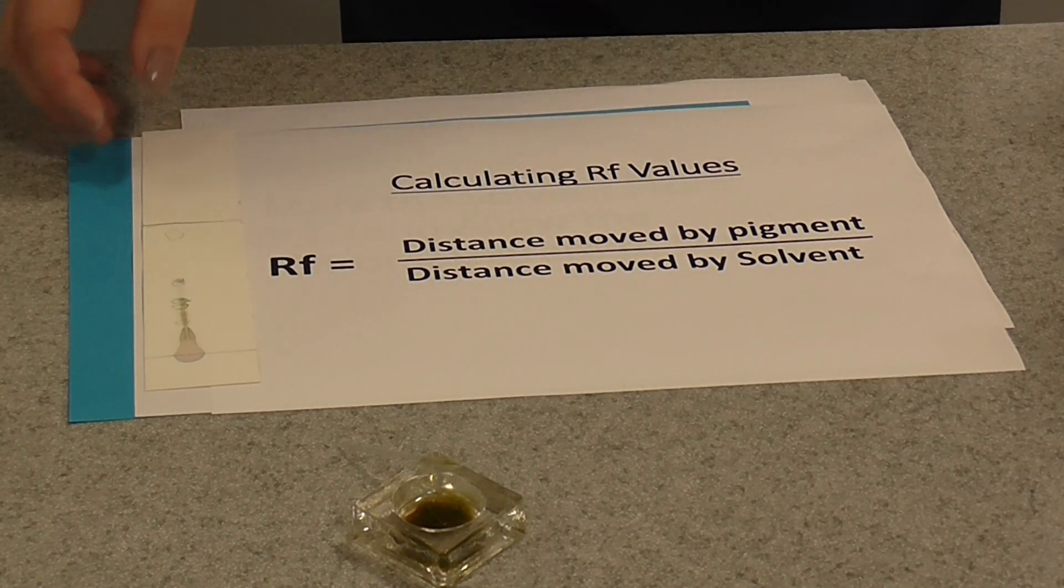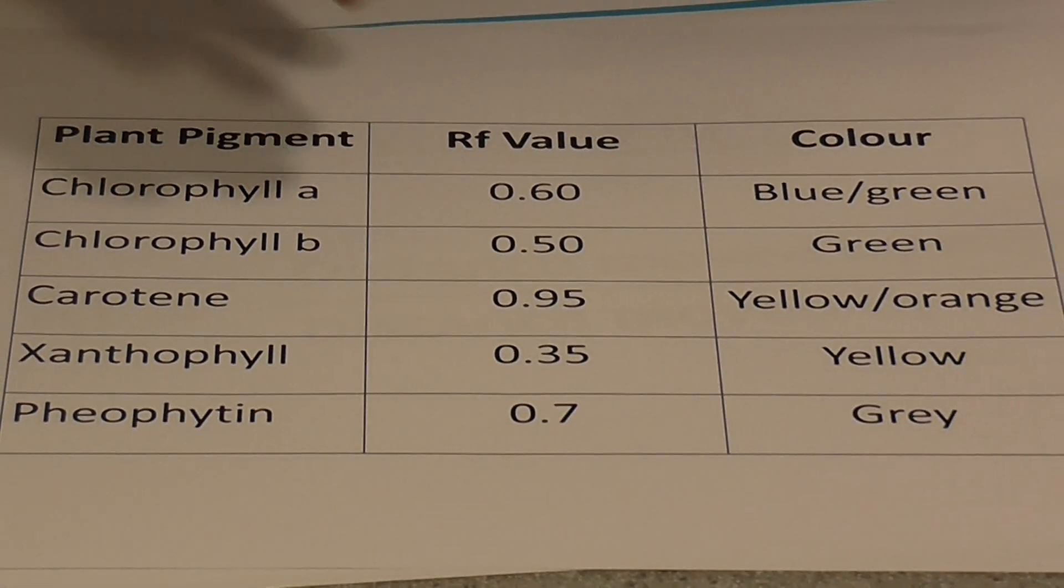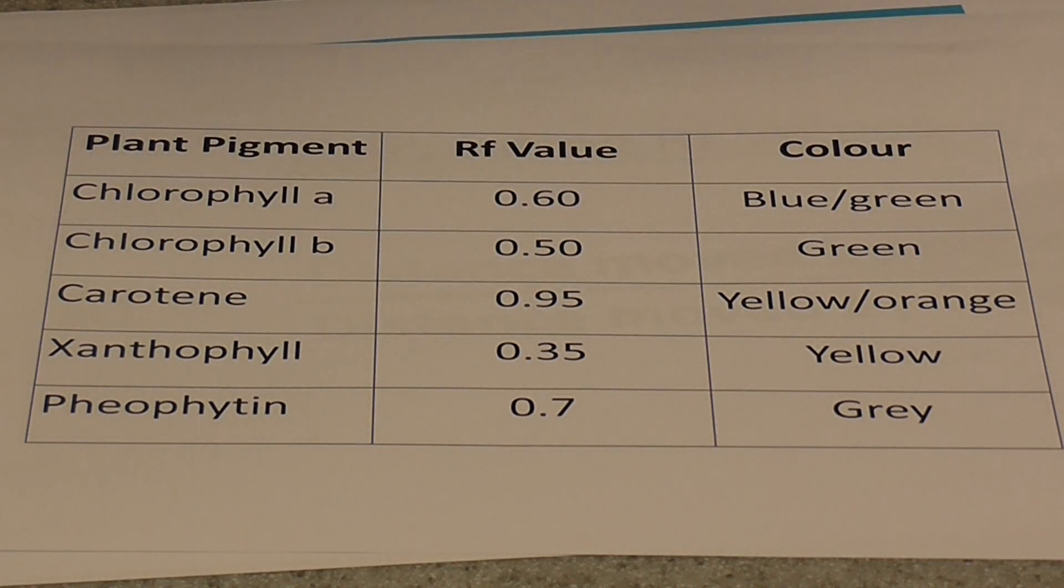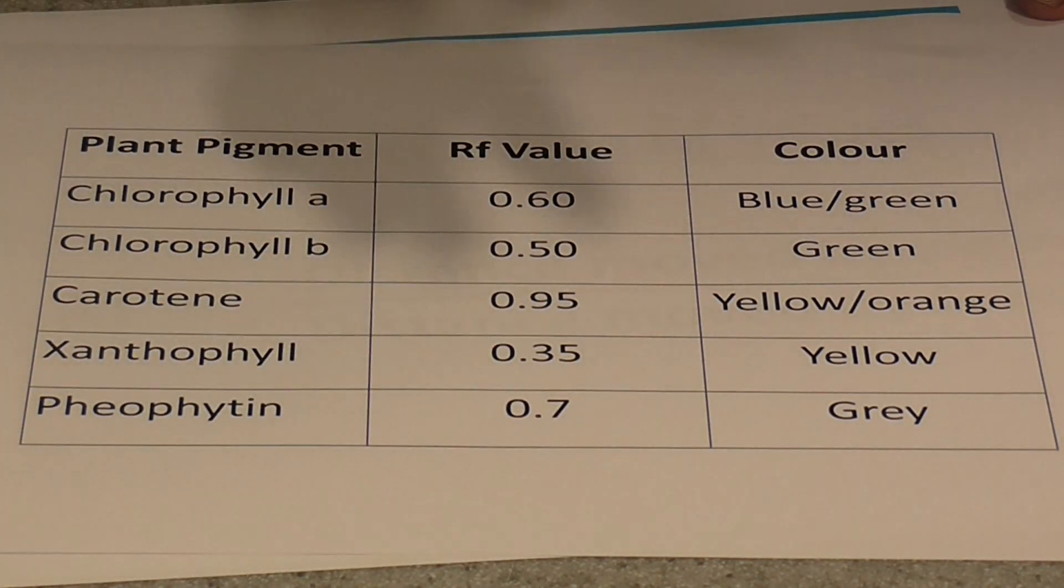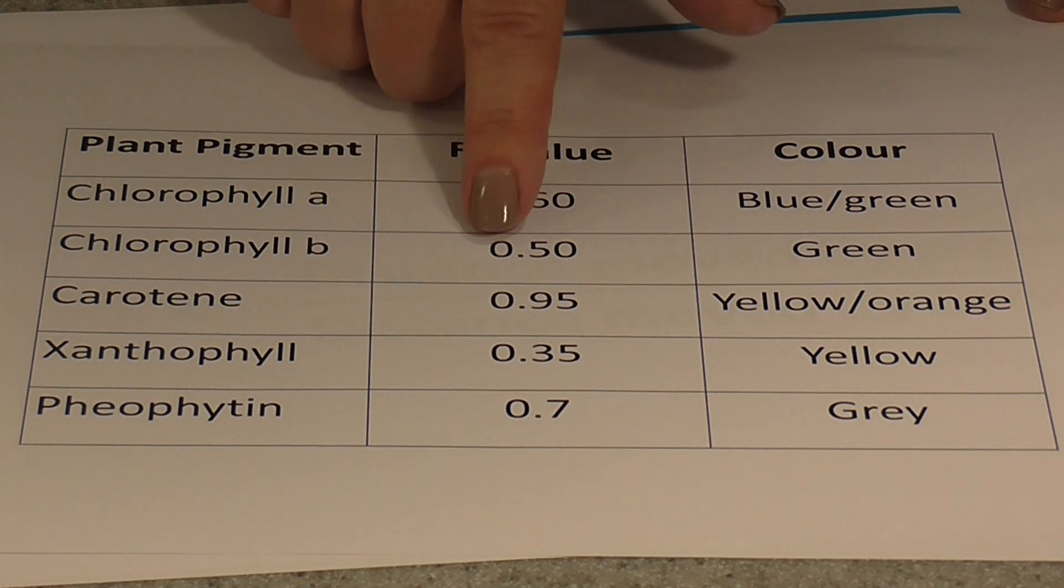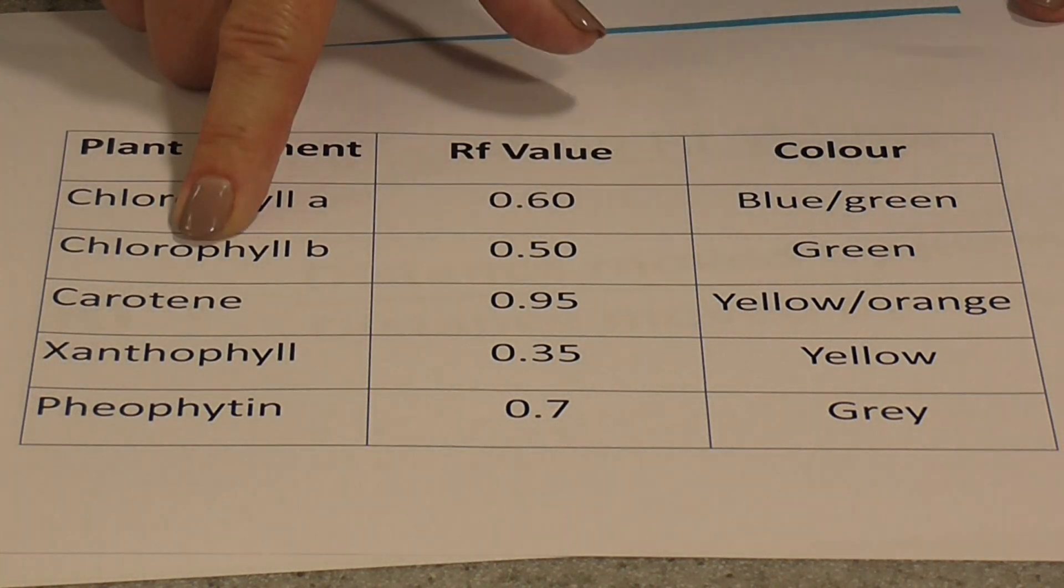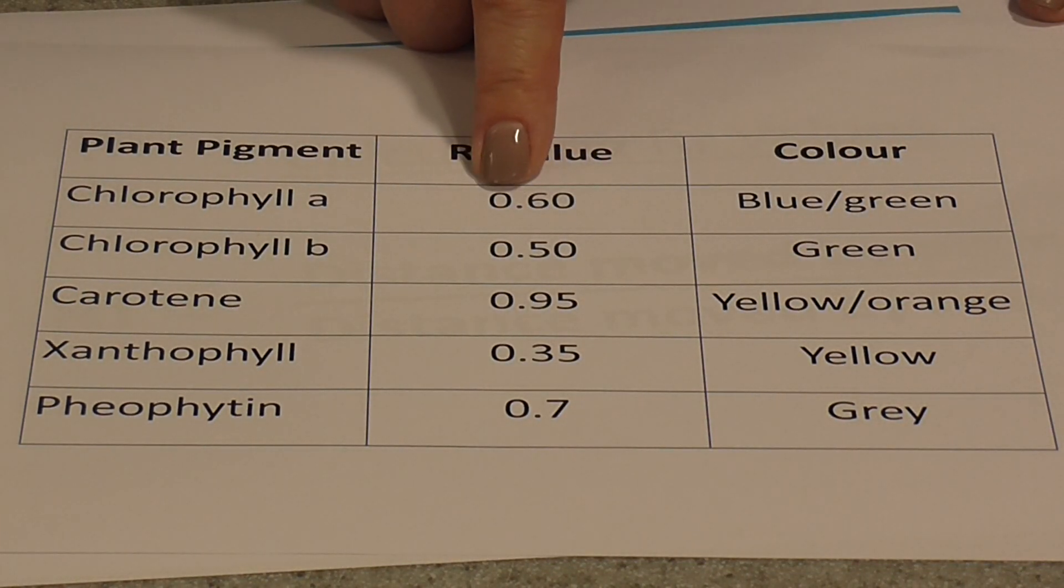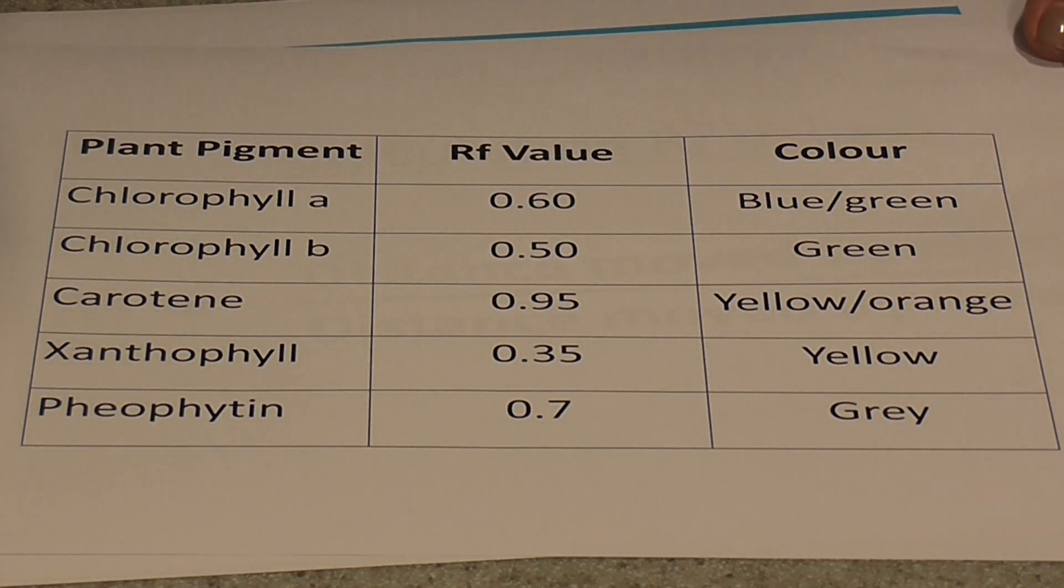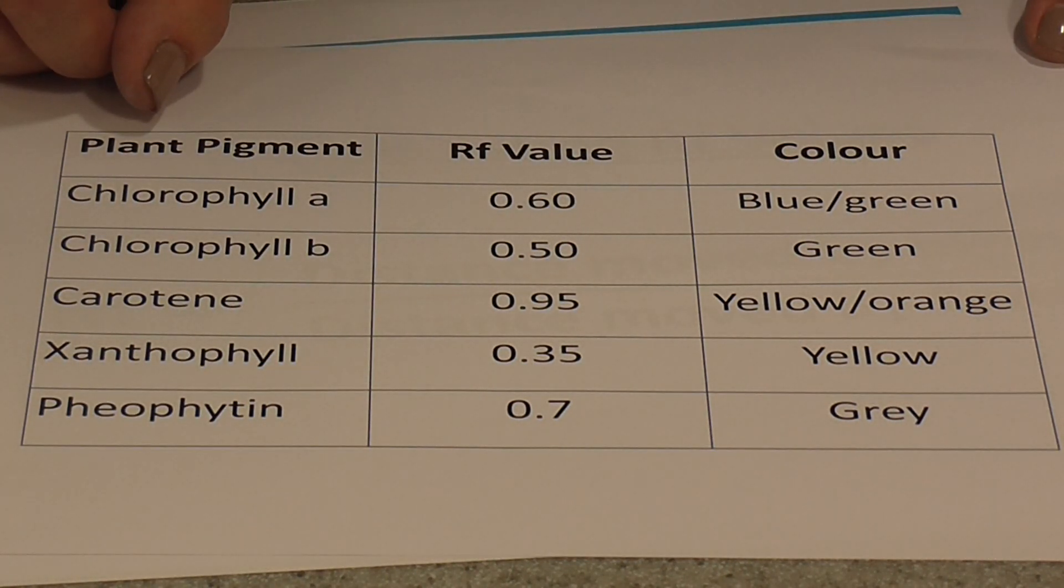That on its own means nothing. What you have to do then is compare your RF values to standard RF values for this technique. Often you don't get exactly the same value, but you're looking for the closest one. For example, if we got a value of 0.50, a greenish spot, we would know that was probably chlorophyll B. You know that you've got your calculation right if you get a value of less than zero. An RF value is always less than zero. So if you get a value of one or above, you know you've basically calculated it the wrong way around.